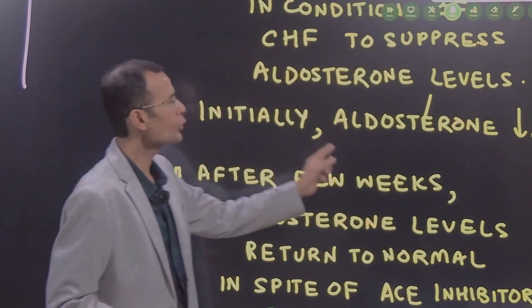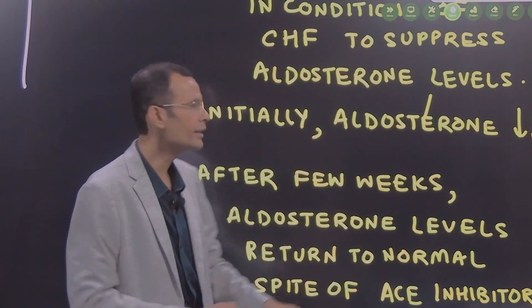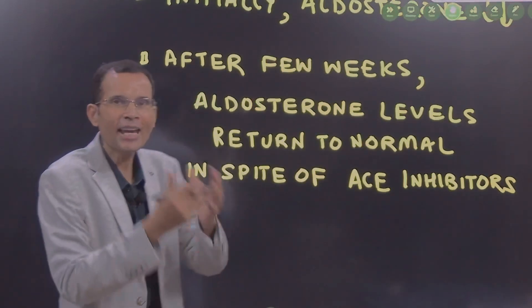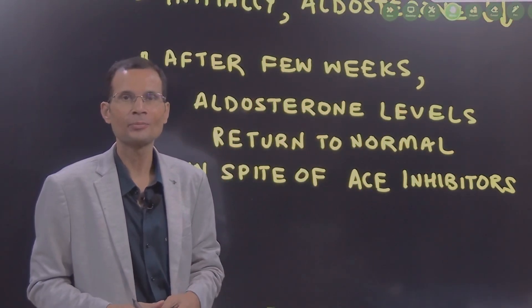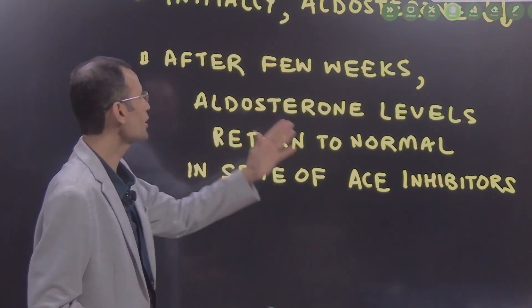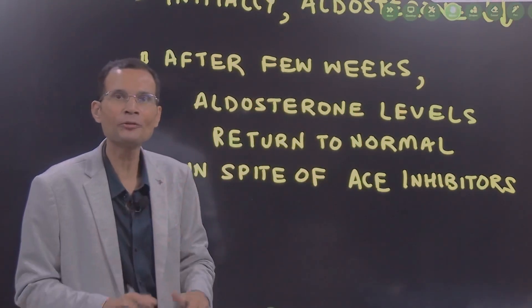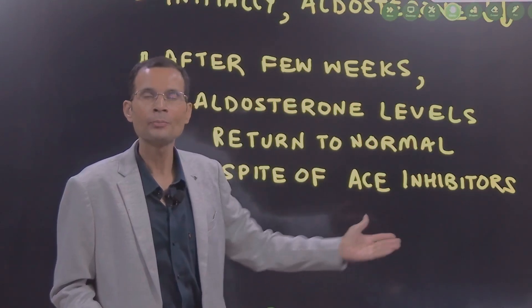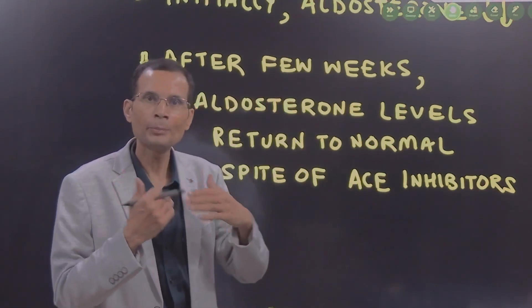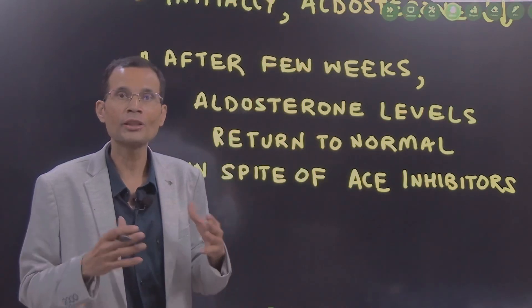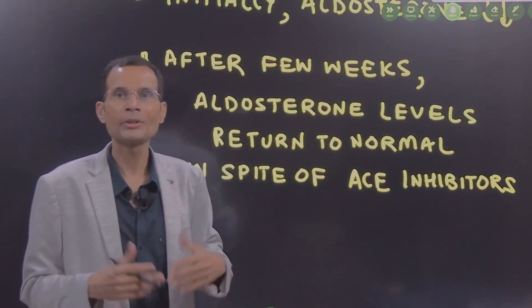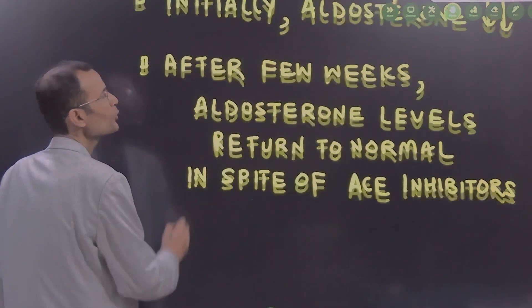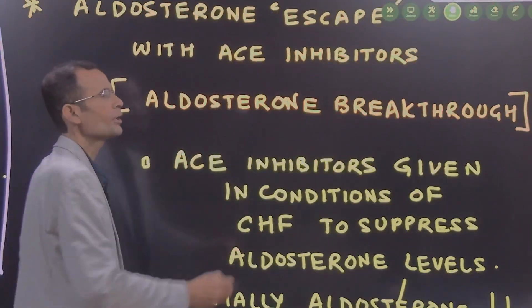Aldosterone has very deleterious effects in hypertension or congestive heart failure because it conserves sodium and water, so ECF volume expands with bad effects on the heart. So when you give ACE inhibitors, there is no angiotensin 2 and hence not much aldosterone is secreted — circulating aldosterone levels will be low. Initially aldosterone levels are low, they are decreased, but then after a few weeks aldosterone escapes the effect of ACE inhibitors. Aldosterone levels return to normal in spite of the continued presence of ACE inhibitors, and that is also called aldosterone escape or aldosterone breakthrough.